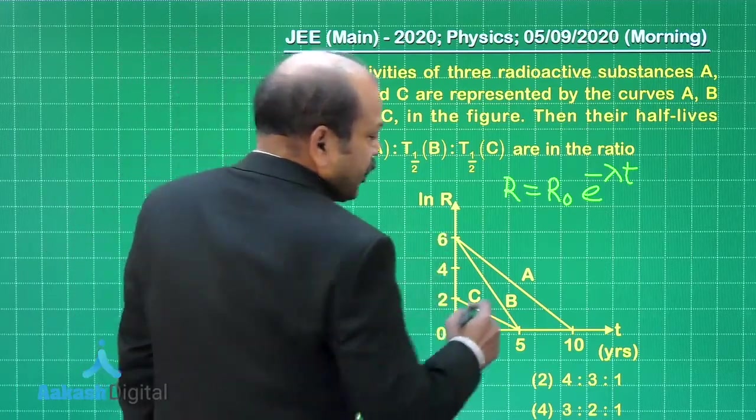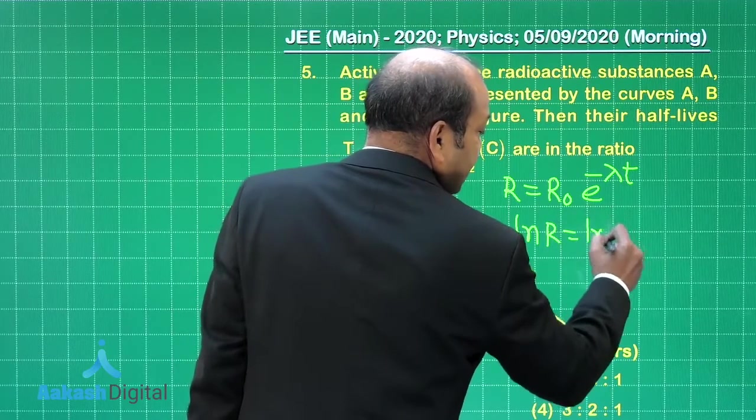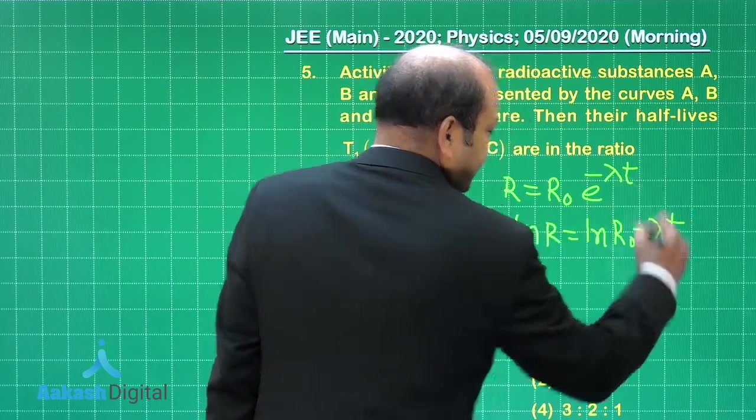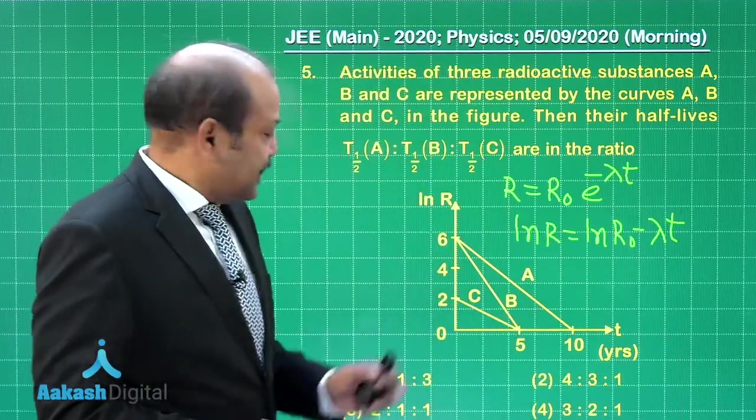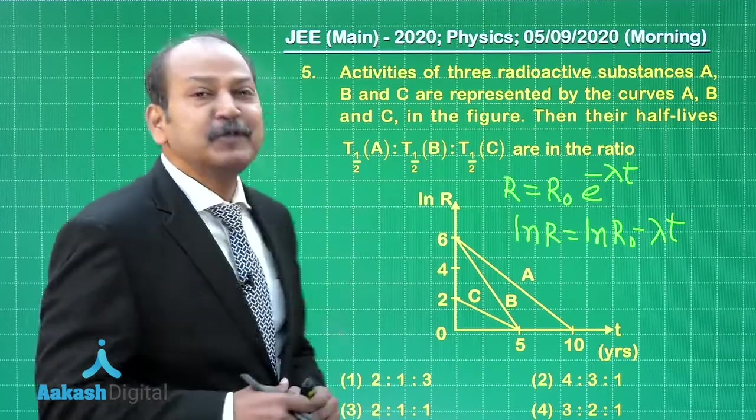If I take log on both sides, we get ln R equals ln R_naught minus lambda into T. And that means the slope of these respective curves is in fact equal to minus lambda.